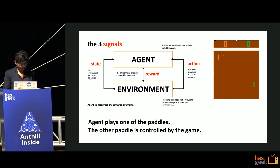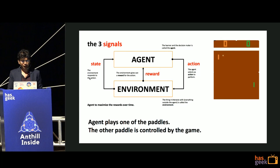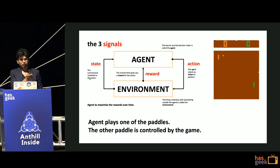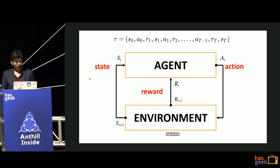In this context: the agent is the green paddle, the environment is everything else in the entire game grid, the action is moving the paddle up or down to intercept the ball, the reward is either win, lose, or nothing since zero happens most of the time, and the state is the whole image - the current position of the ball is the new state after each action.